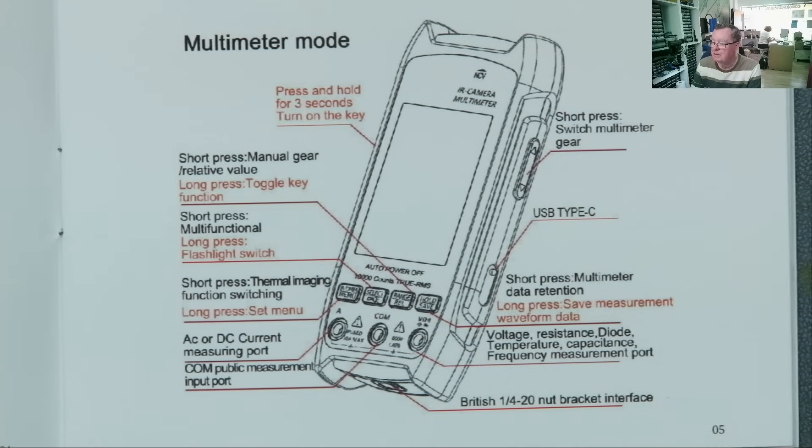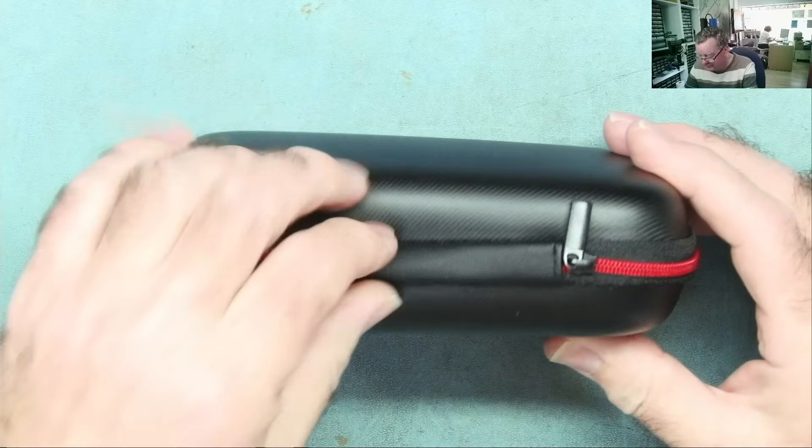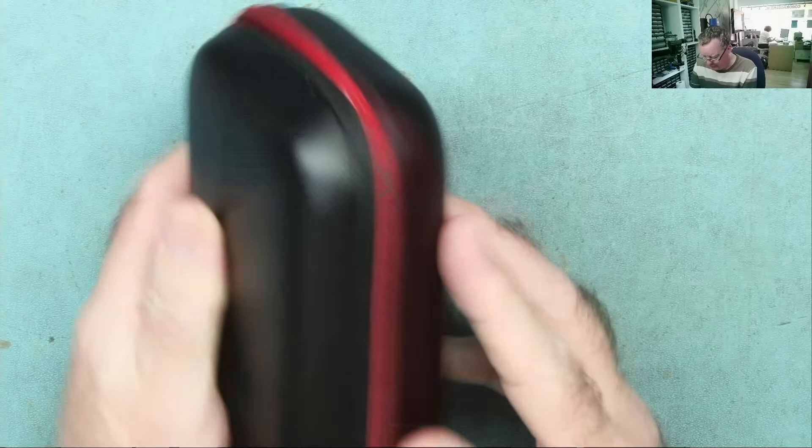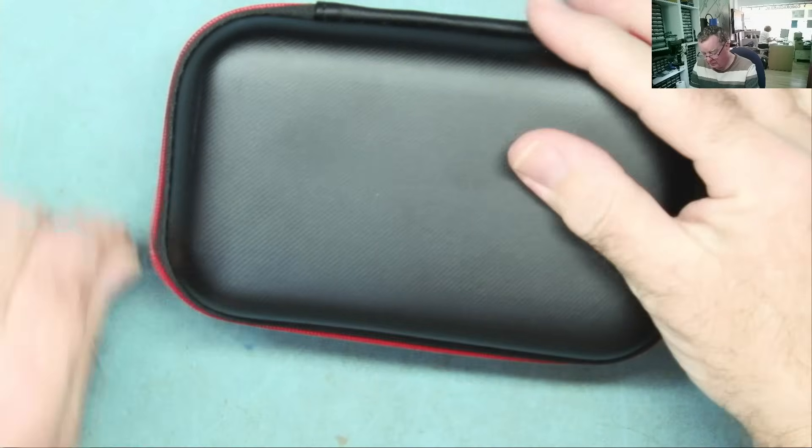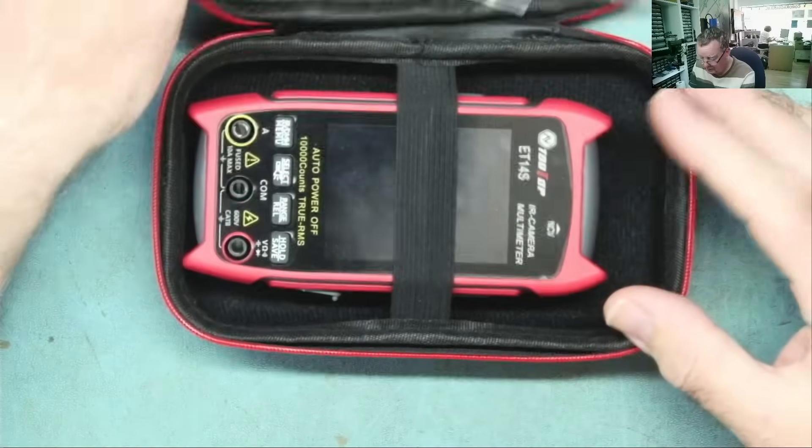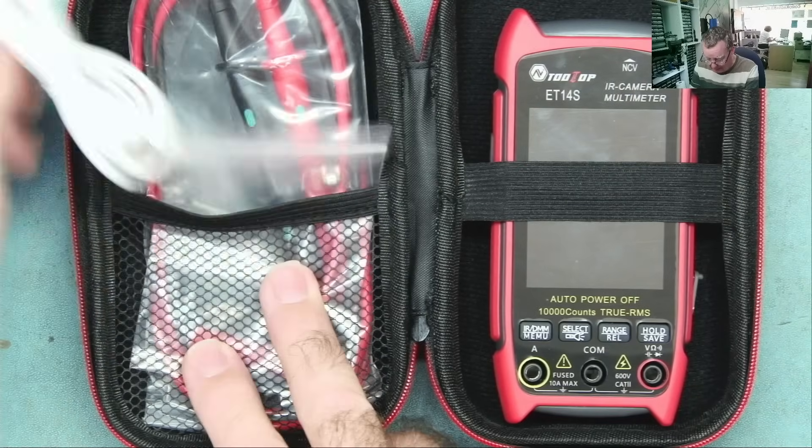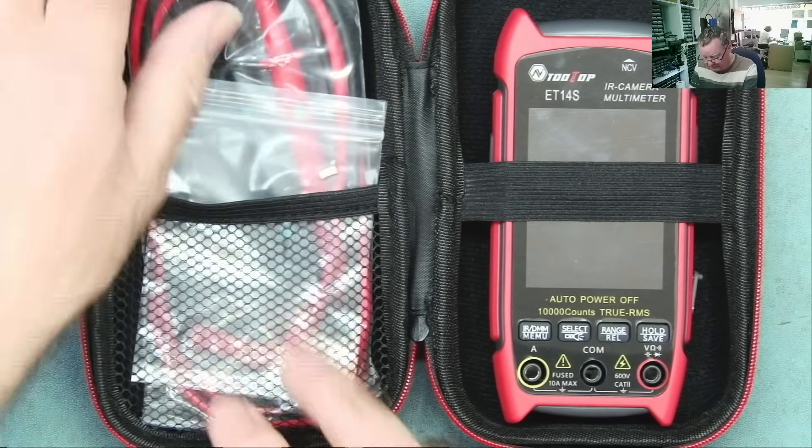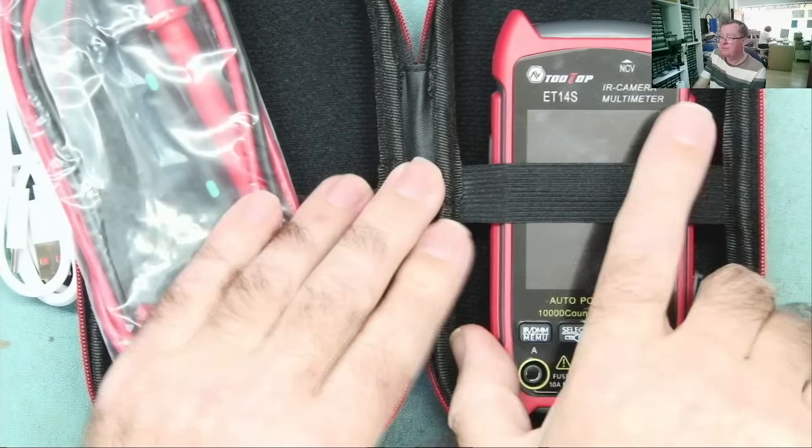Let's have a look at the multimeter thermal camera itself. This comes in a nice little case. No carrying handle, but nice protective case. And here is our ET-14S. We have USB cable, USB-C, some meter probes, and the multimeter.